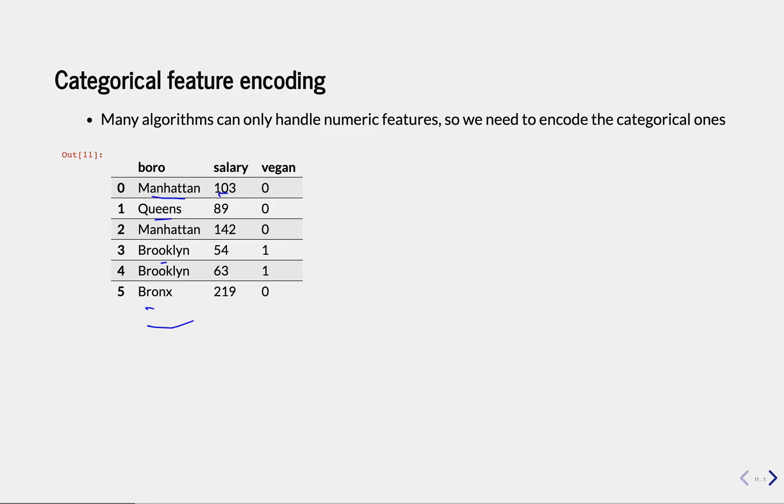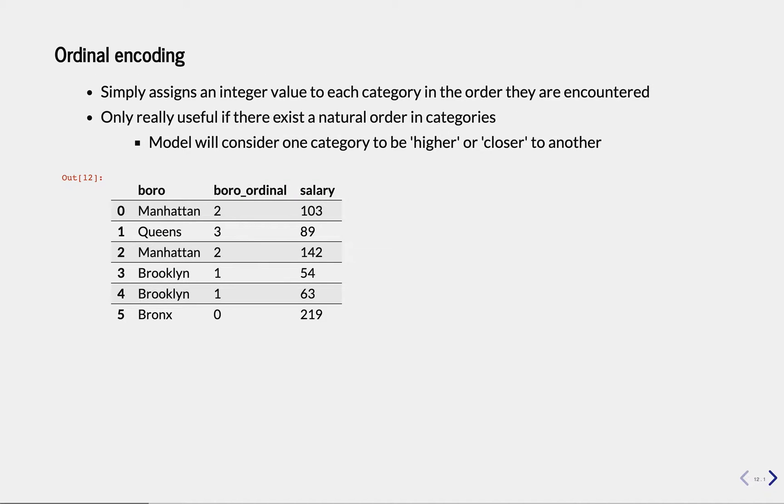Now to do that with, for instance, the support vector machine or neural network, we need to transform this feature into a numerical feature. And there are again different ways of doing that.